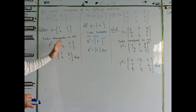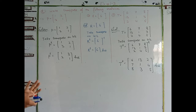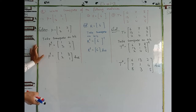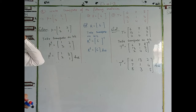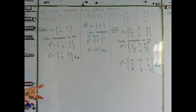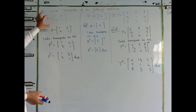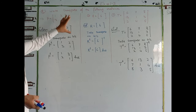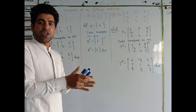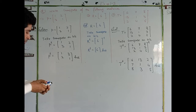We will explain the matrix elements, rows, and columns. We will also explain the transpose. Transpose means we convert rows to columns and columns to rows. When we change row to column and column to row, we call it transpose.